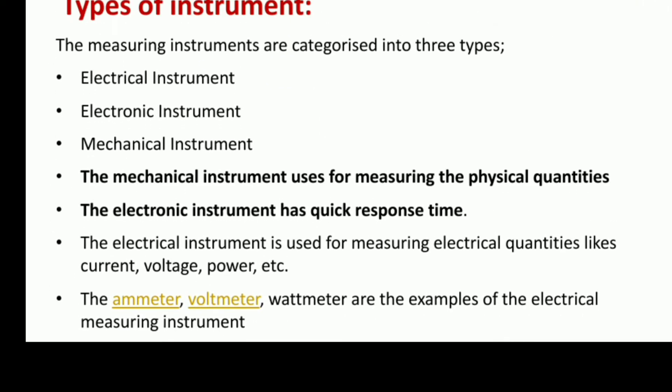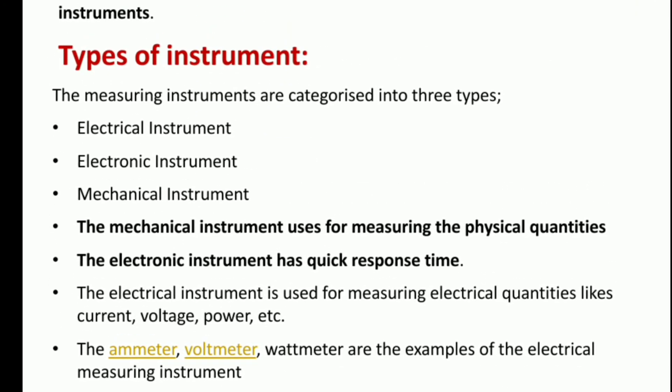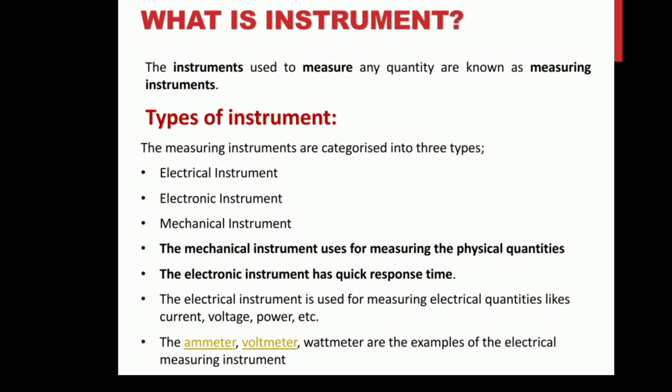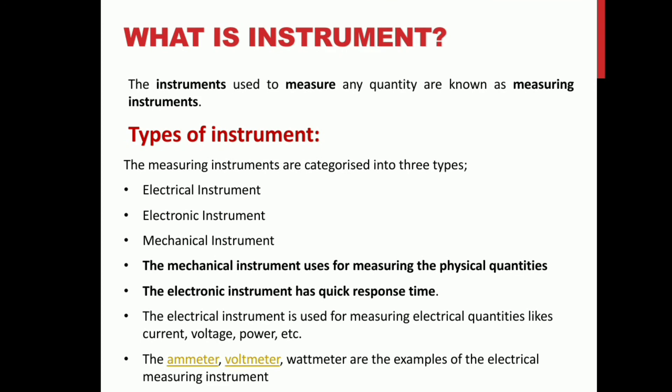Electrical instruments are used for measuring electrical quantities like current, voltage, power, etc. Examples of electrical measuring instruments are the ammeter, voltmeter, and wattmeter. The ammeter measures current, the voltmeter measures voltage, and the wattmeter measures power.